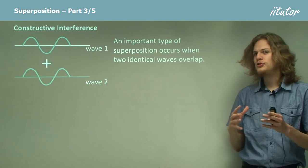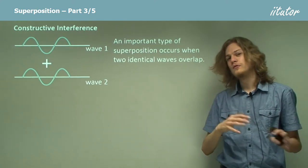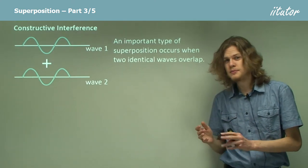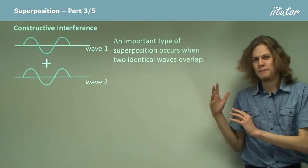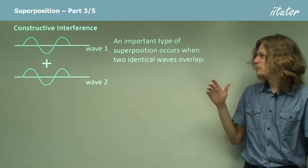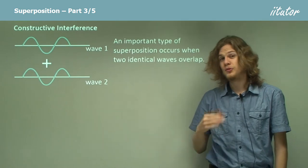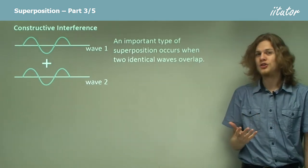Now a very important type of superposition occurs when we have two very similar or identical waves that are overlapping. So we can see for example that wave 1 and wave 2 have the same wavelength and about the same amplitude.